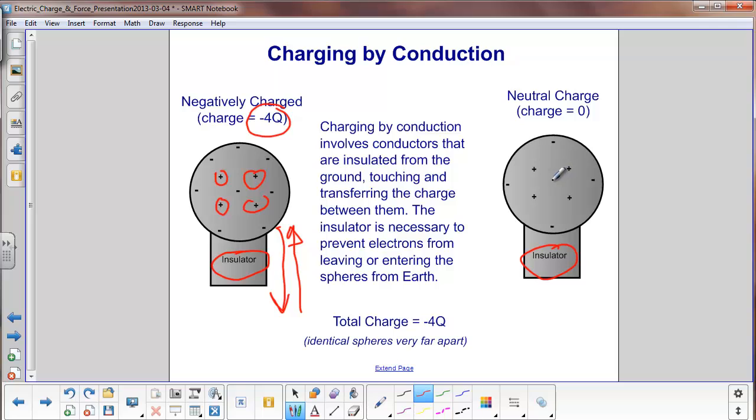Over on this sphere, which we're calling neutral, you can see that there are 4 positive charges balanced by 4 negative, giving you a net charge of 0.